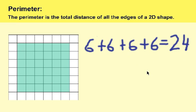And again, if it's inches it will be twenty-four inches, if it's centimeters it will be twenty-four centimeters, if it's miles it's twenty-four miles, if it's feet it's twenty-four feet. Pretty simple and straightforward — just add all the sides together to find the perimeter. Thank you.